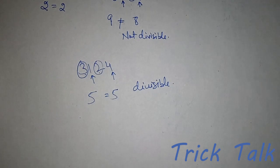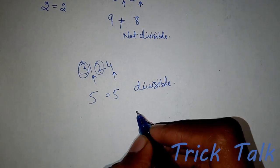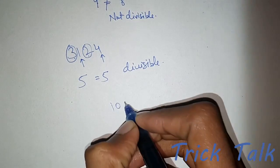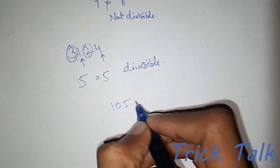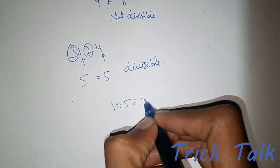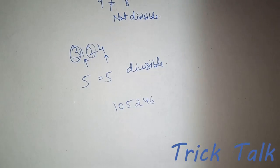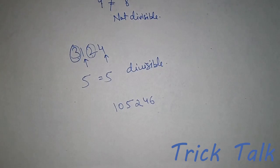Let's check it out with another example: 1 0 5 2 2 4 6, to check whether it is divisible by 11.